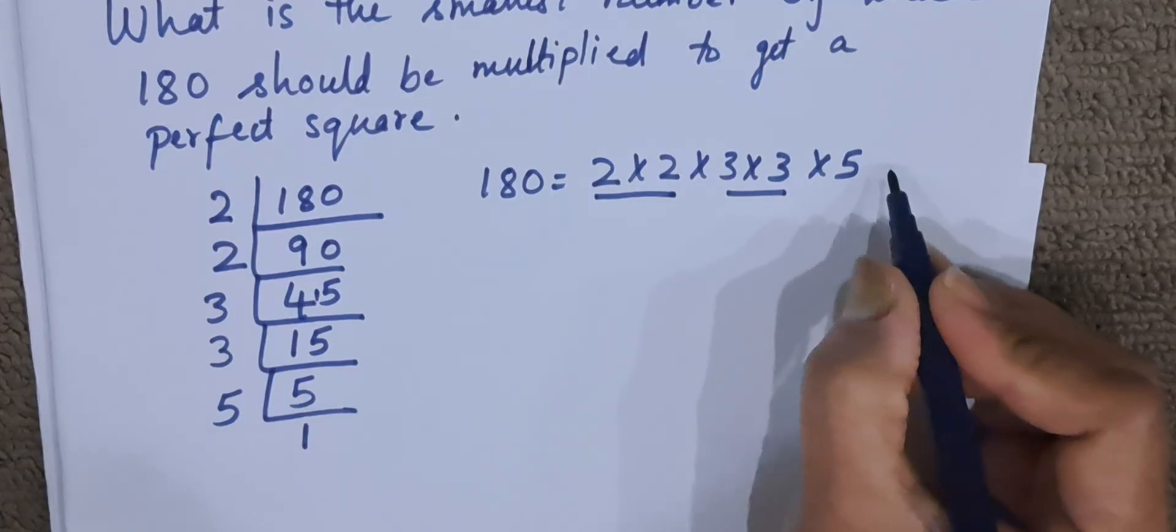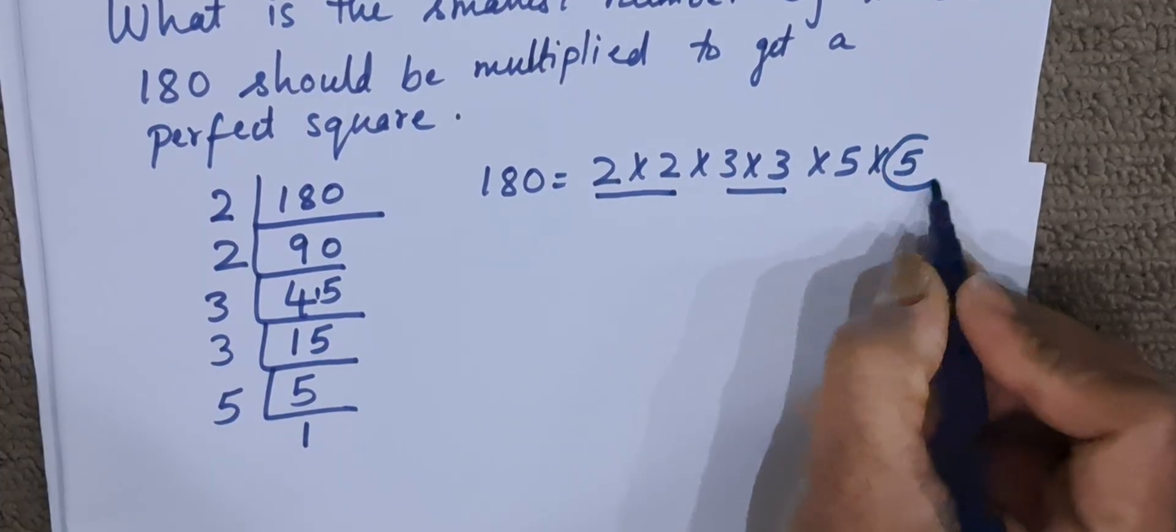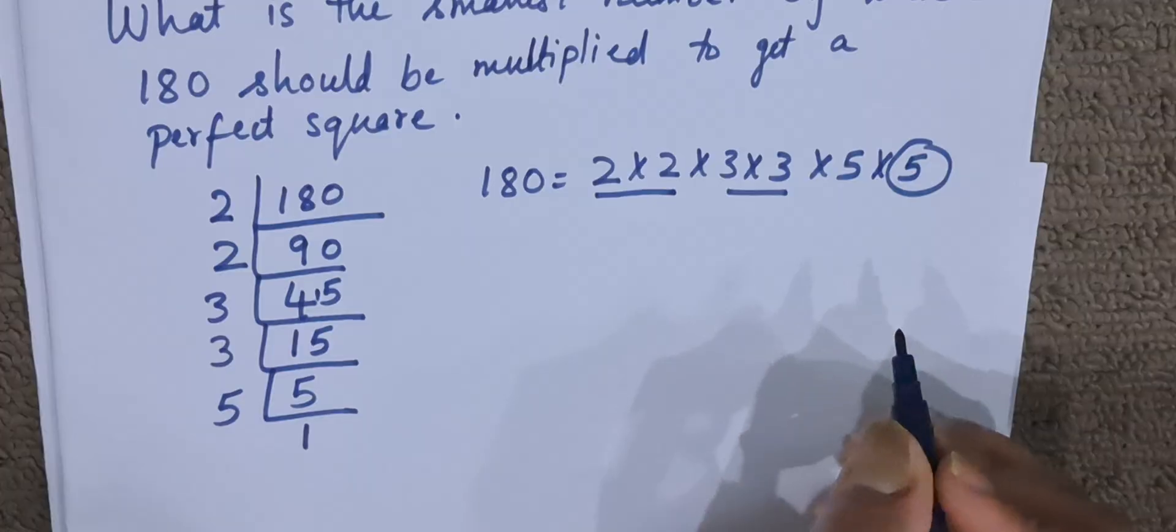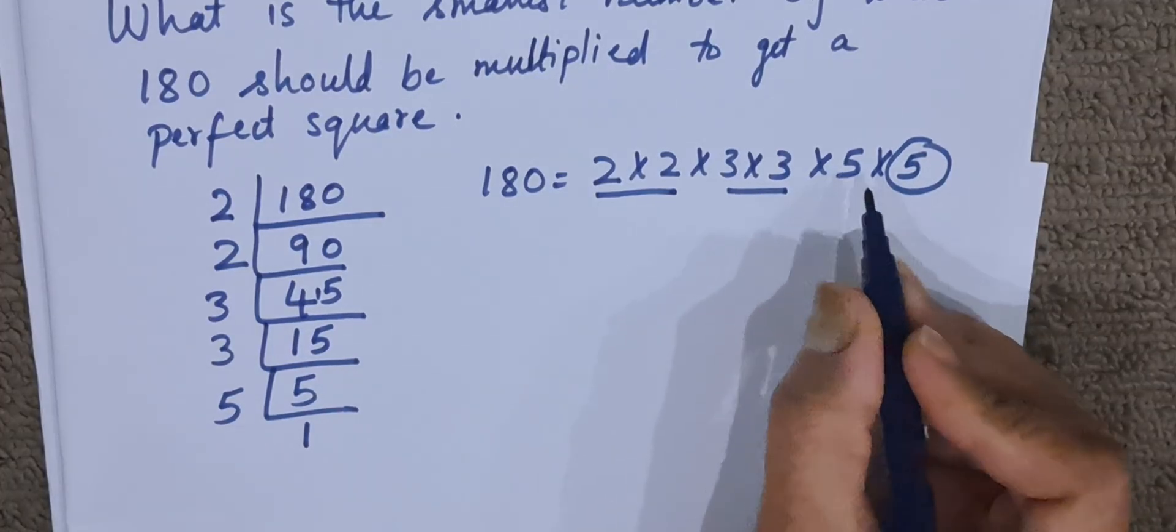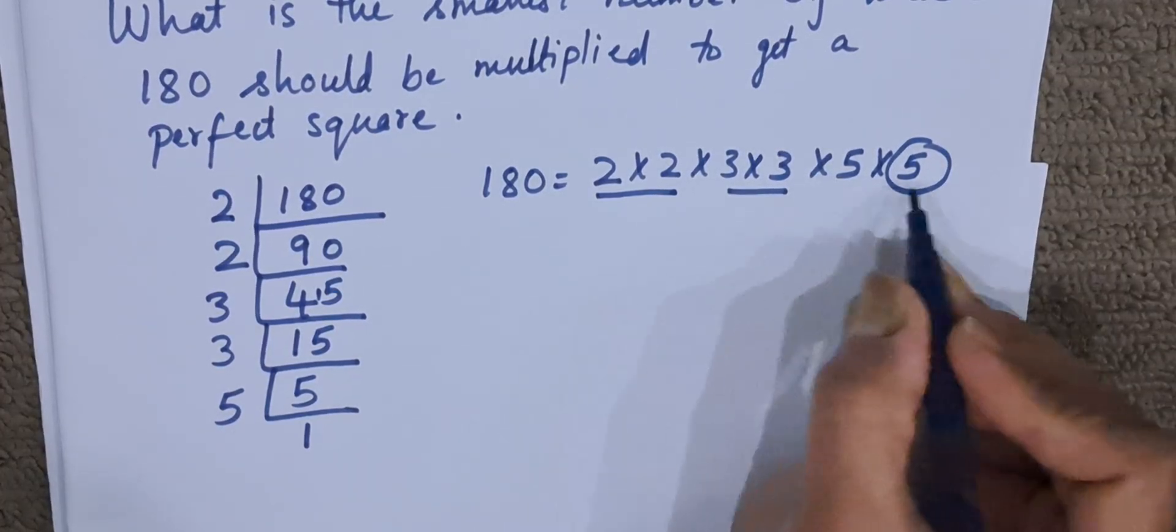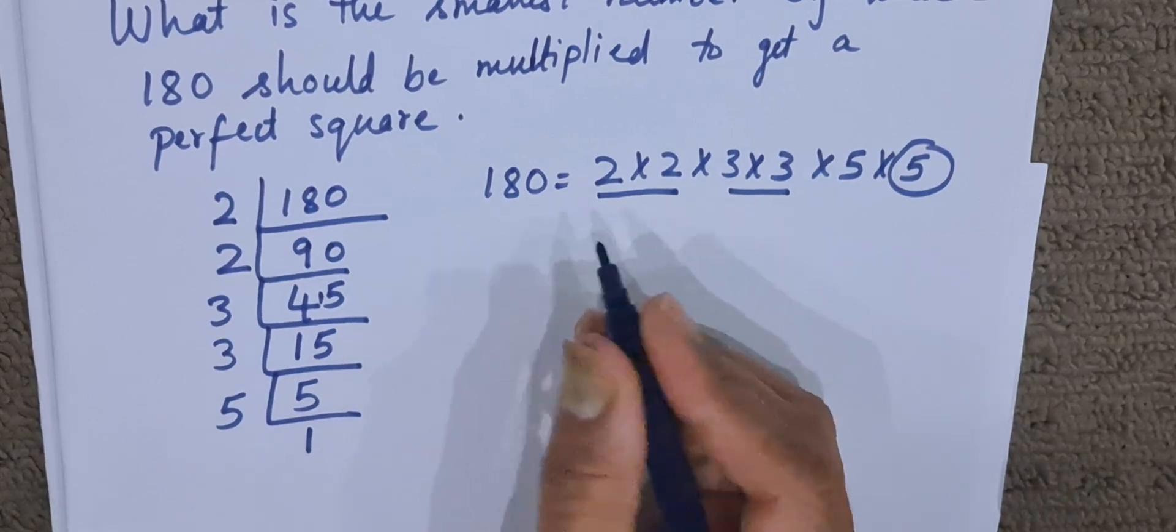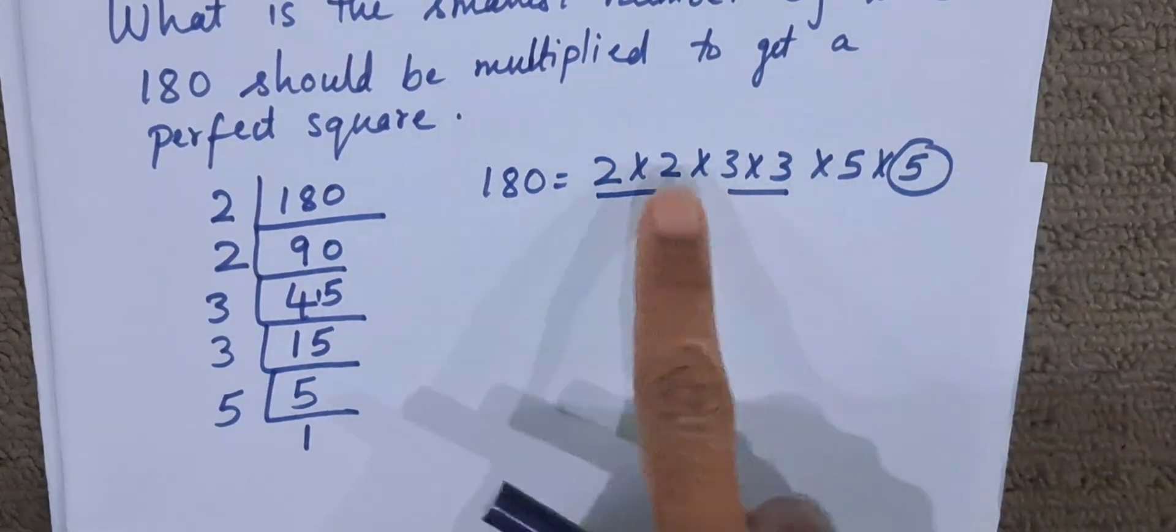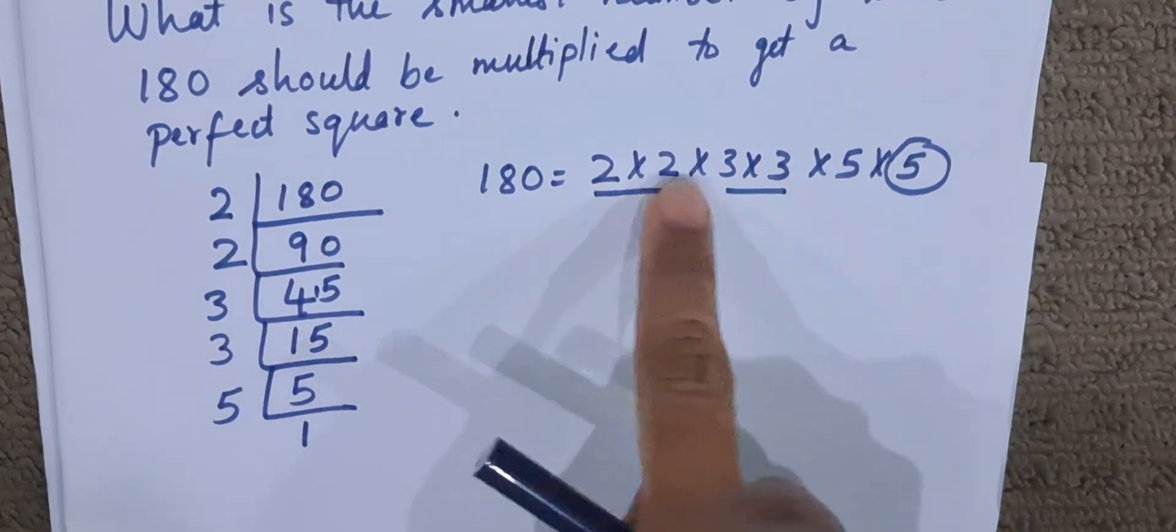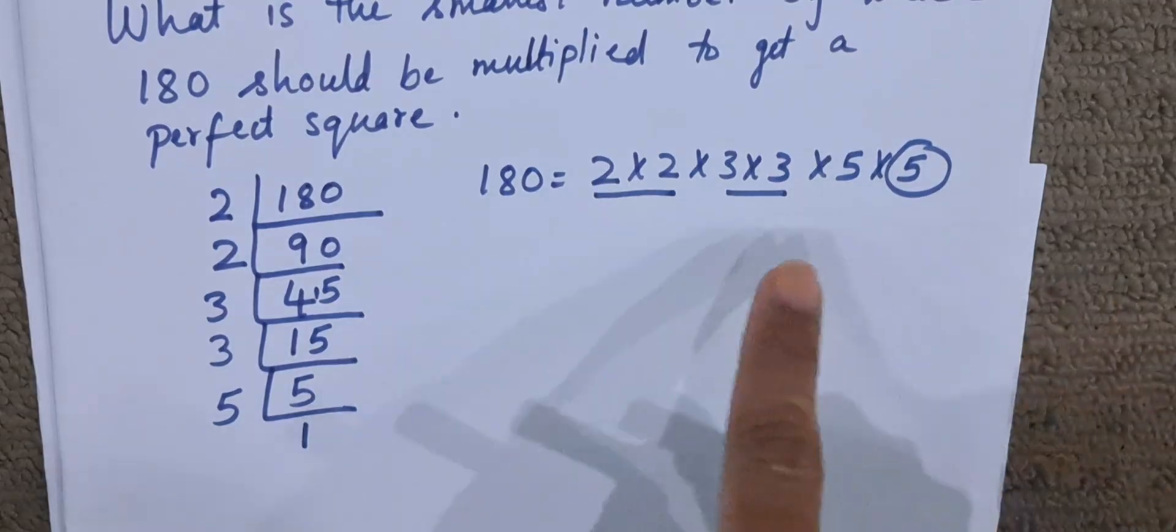So we have to have one extra 5 to make this a perfect square, because 5 is alone. We have to have a set of 2 numbers, then only it becomes a perfect square. If it was a cube, we would make a set of 3 numbers, 2 × 2 × 2. But here we have to look for a set of 2 numbers.